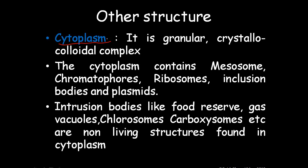Cytoplasm is a granular crystalline colloid complex which is between the plasma membrane and nucleoid. It contains various structures like mesosomes, chromatophores, ribosomes, inclusion bodies, and plasmids. Inclusion bodies are like food reserves — they can be organic or inorganic. Gas vacuoles, chlorosomes, carboxysomes, etc. are also found; they are non-living structures found in the cytoplasm.